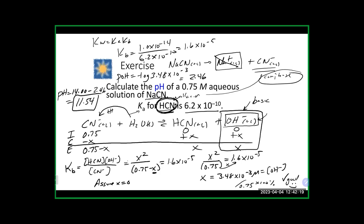x equals the hydroxide concentration, so pOH = -log(3.48×10⁻³) ≈ 2.46. Then pH = 14 - 2.46 = 11.54, which is basic - confirming our prediction. If you had a salt that produced H3O+ instead, you'd use Ka and go directly to pH from x since x would equal the H+ concentration.